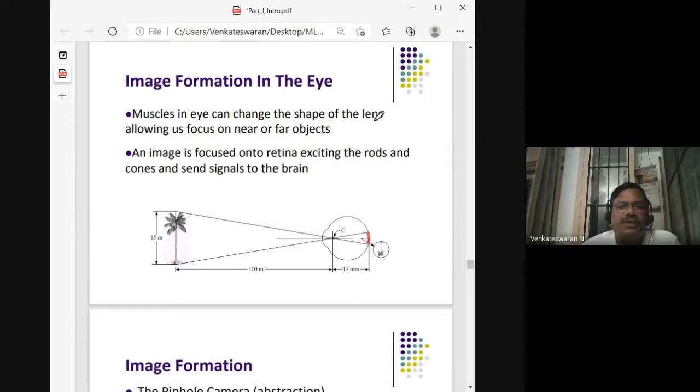An image is focused on the retina, exciting the rods and cones and sending signals to the brain. This is essentially what is called the pinhole camera.